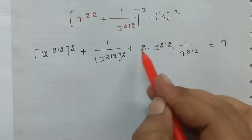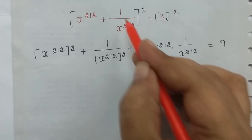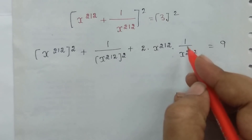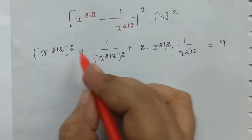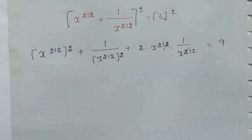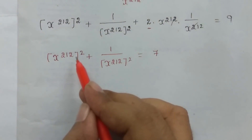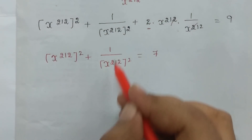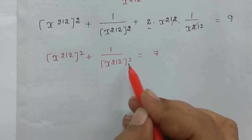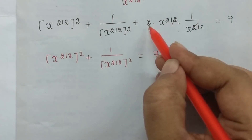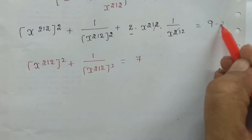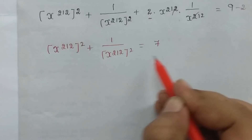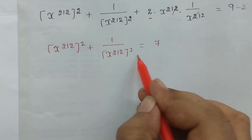So a² plus b² plus 2ab — that is (a+b)² expanded. Here the 2ab terms cancel. So x^(1/2) all square plus 1/x^(1/2) all square is equal to 9 minus 2, which gives 7.